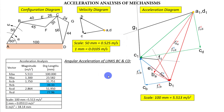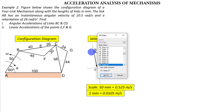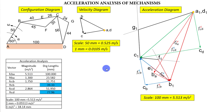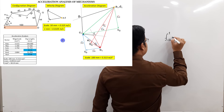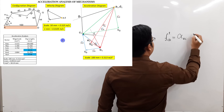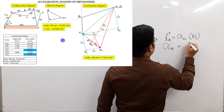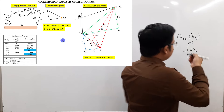Angular accelerations can be worked out easily using the formula: tangential acceleration = alpha × R. So for link BC: alpha_BC = F_tangential(C w.r.t. B) / BC. Similarly for link CD: alpha_CD = F_tangential(C w.r.t. D) / CD. Just rearrange the tangential acceleration formula.